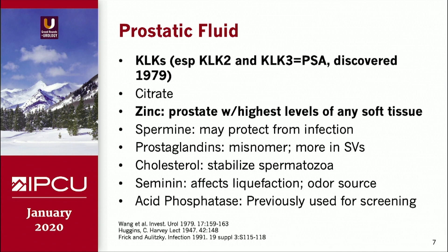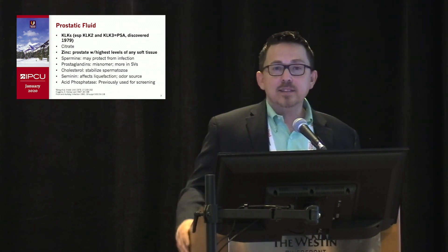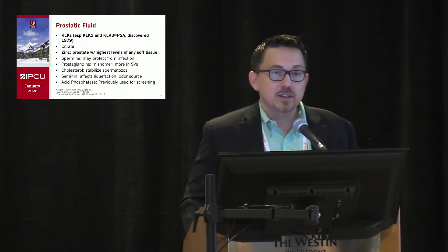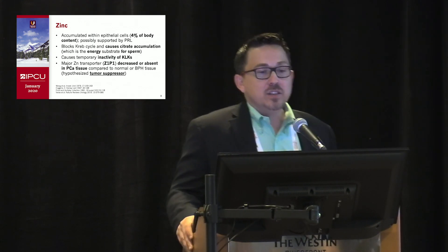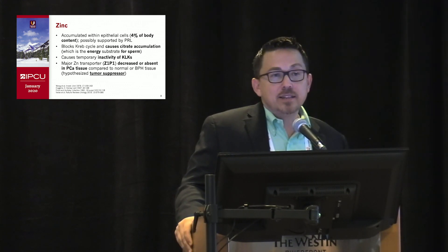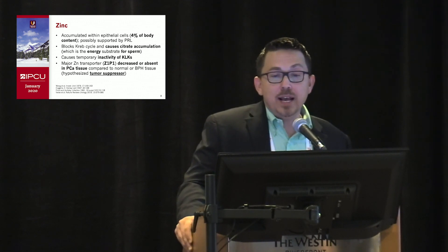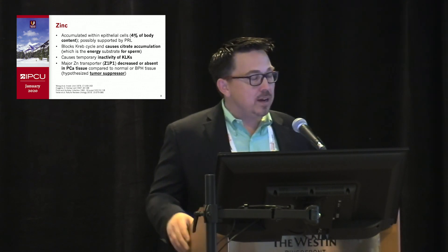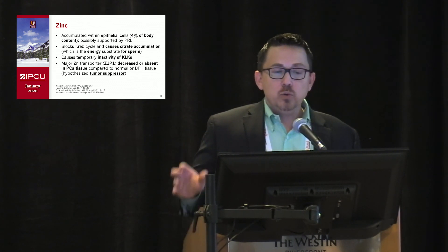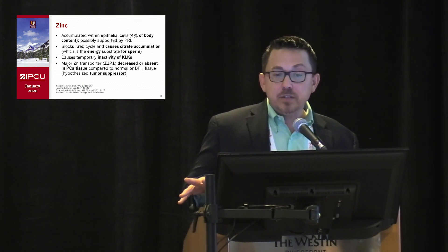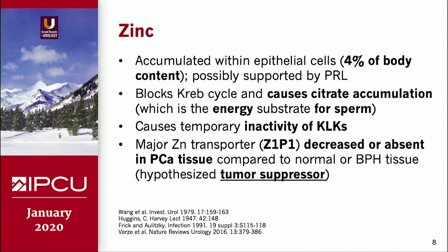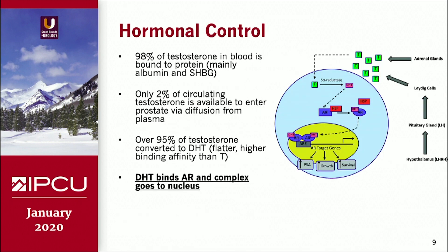Spermine and prostaglandins are named for the prostate, but prostaglandins are something of a misnomer as they are more heavily localized to the seminal vesicles. Some of you may remember ordering prostate acid phosphatase for prostate cancer patients. Zinc is accumulated within the epithelial cells, constituting about 4% of a man's body content, possibly supported by prolactin stimulation. Importantly, zinc blocks the Krebs cycle and causes accumulation of citrate, which is the energy substrate for sperm.